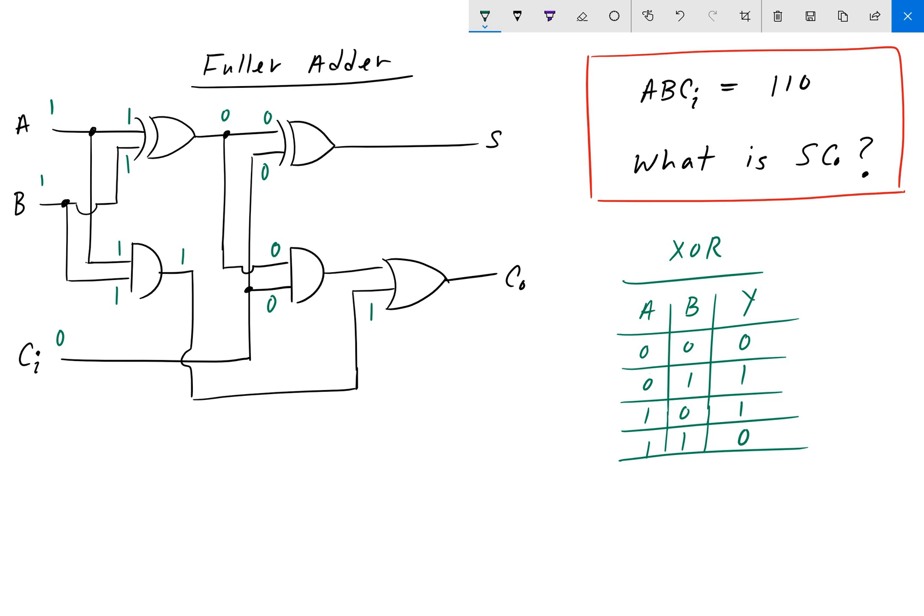And now going to the second XOR gate, we have two 0s, which is, looking at our chart here, again 0. So, S is equal to 0.